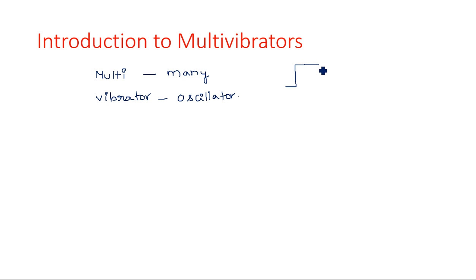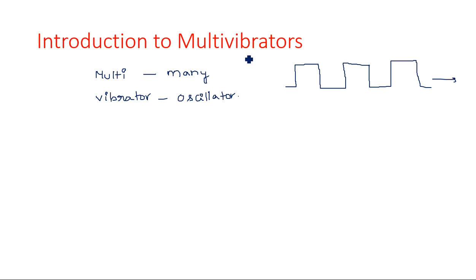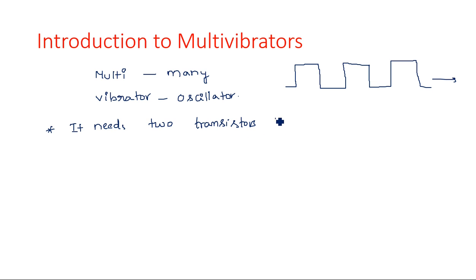An oscillation is any type of waveform. For example, a square waveform continuously repeating — on, off, on, off — for an infinite duration. This is called a multivibrator: many oscillations are being generated. It is made up of a combination of two transistors, so two transistors are required for the creation of a multivibrator.